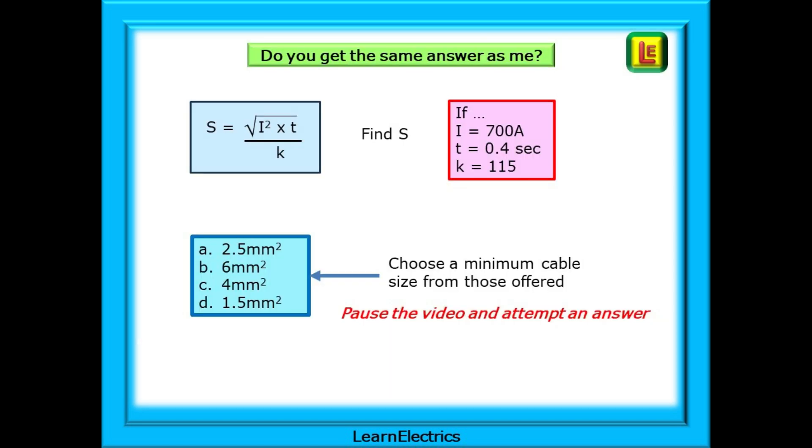It's important that you are able to use this formula correctly so let's have a little calculation to do. This is the sort of thing to expect in an exam or assessment. Using the adiabatic equation shown find S the minimum size earth conductor to satisfy the requirements for the data given in the red box. Then just as in an exam choose the minimum cable size from those offered A B C or D. Pause the video whilst you attempt an answer. The solution is on the next slide.